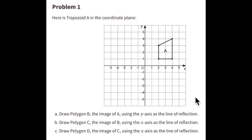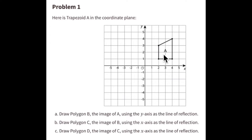There are two words to keep track of here. One is figure — this shape right here is called a figure. It is figure A. And then when you reflect it, it becomes an image of figure A, and that is called image B or polygon B. So B is an image of figure A.